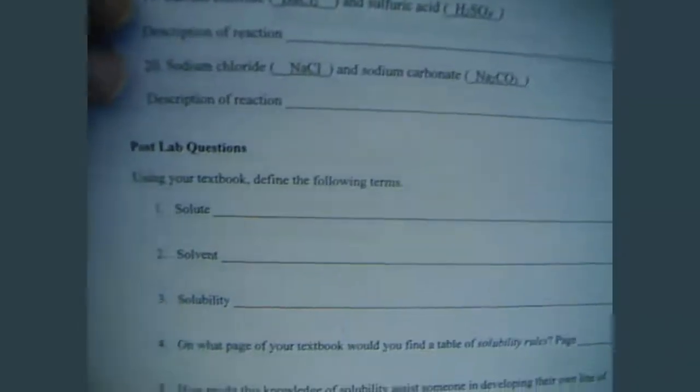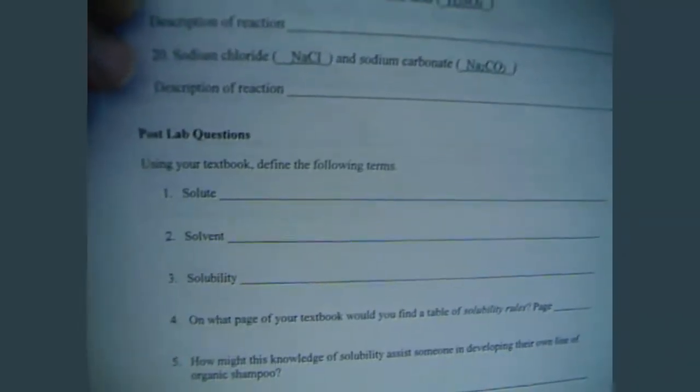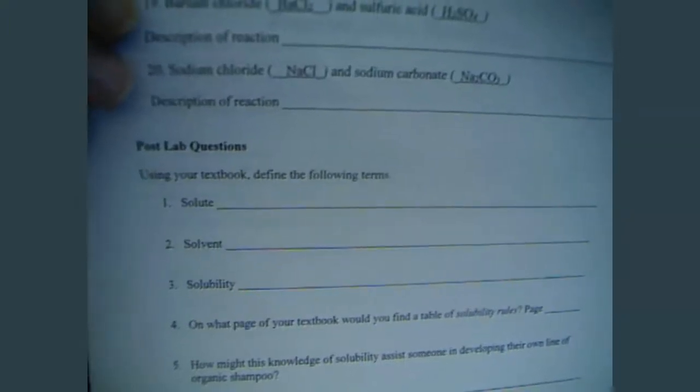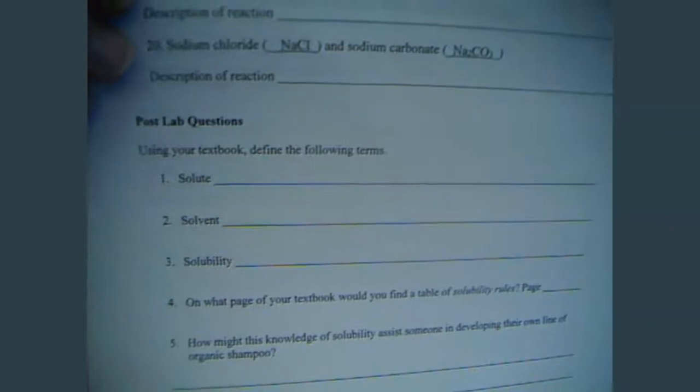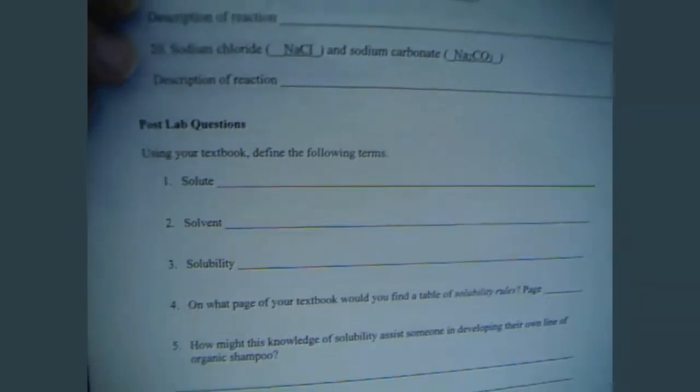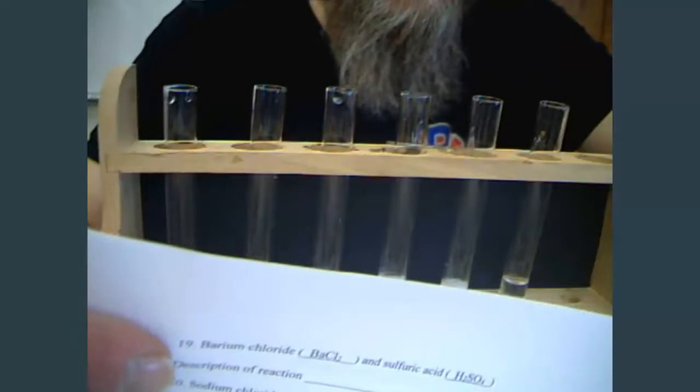Now that you have all 20 of these recorded, I put a couple of questions on here for you. Using your textbook or another source, you could Google it if you want, define these terms: solute, solvent, and solubility. Number four. On what page of your textbook would you find a table of solubility rules? So tell me what the page number is. Your textbook does have solubility rules in it. You got to write down the page number in which you would find these solubility rules.